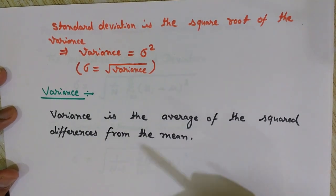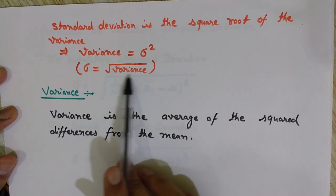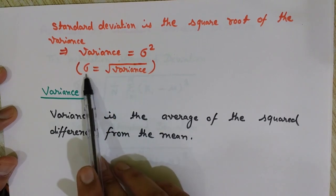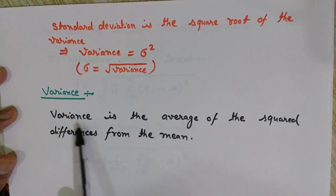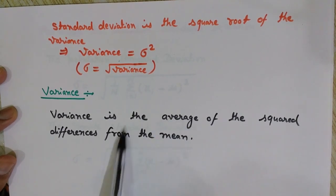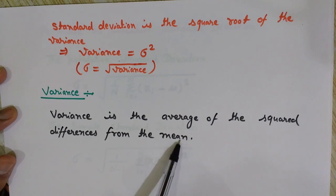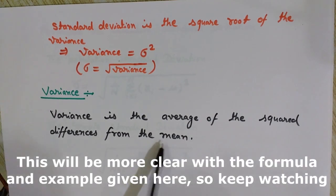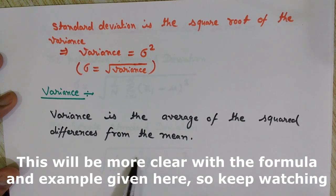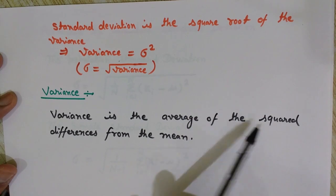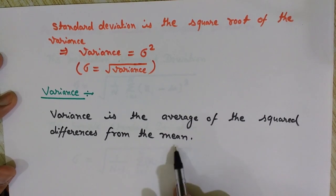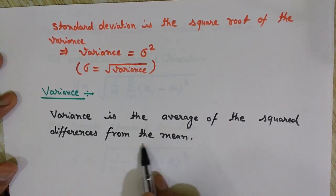If we know or have calculated the value of variance, we can simply take its square root and get the value of standard deviation. Now, what is variance? Variance is the average of the squared differences from the mean. If we have a set of numbers, we find the mean value — we add the numbers and divide by the number of terms present in the set — and then we find the average of the squared differences from that mean.